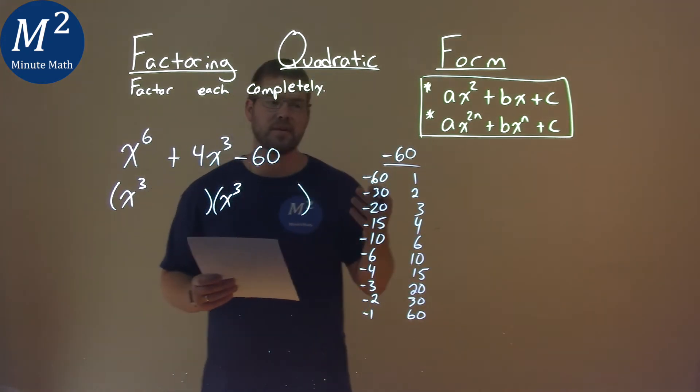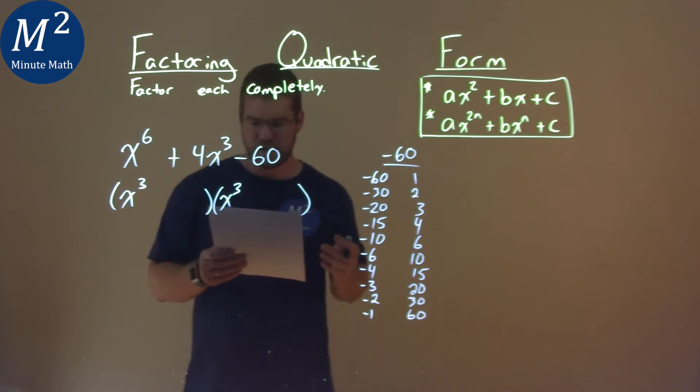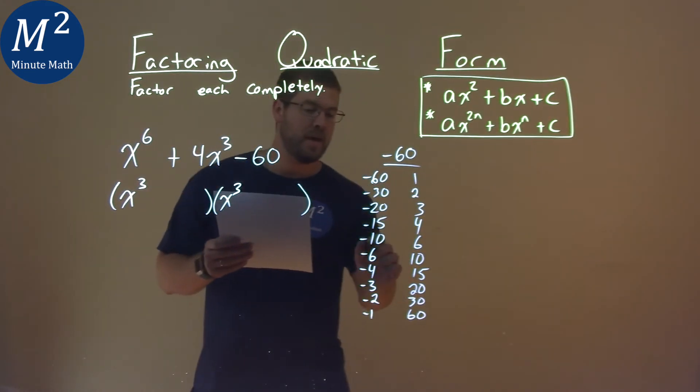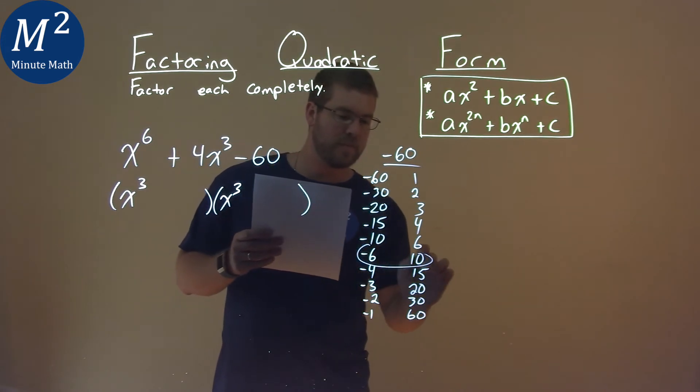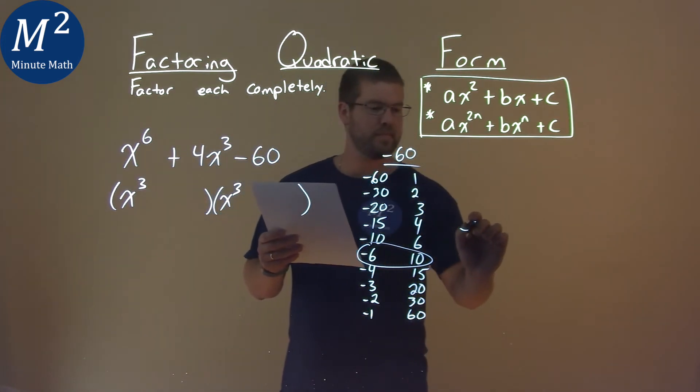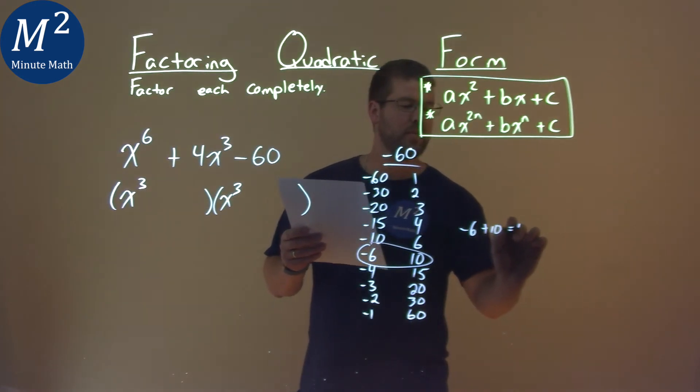So, out of all these pairs, we know they multiply to negative 60, but which ones add to be a positive 4? Can you guess it? That's negative 6 and positive 10. Negative 6 plus 10 equals a positive 4.